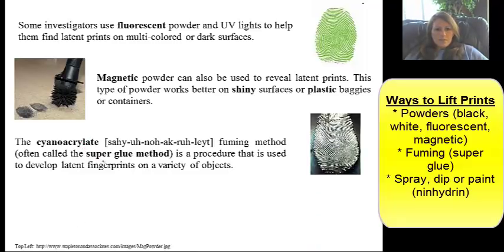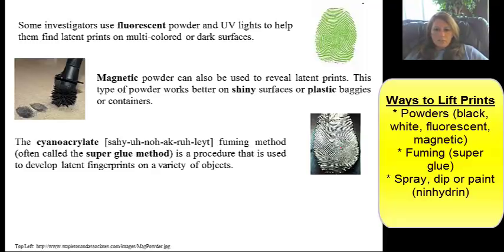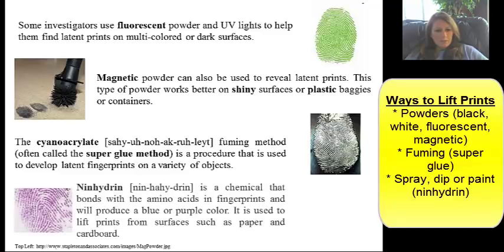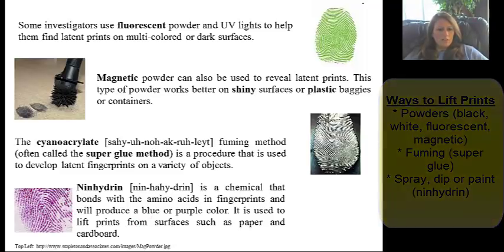You may have heard of the superglue method — it's a fuming technique using cyanoacrylate, which is just superglue. It will glow white. They discovered it in the 80s. They take the print, put it in a chamber, then heat up the superglue. Those fumes attach to the print or object, reacting with the amino acids left behind in your fingerprint. Ninhydrin is another chemical that reacts with amino acids, and depending on the surface, will make blue or purple prints.